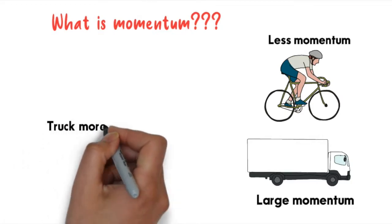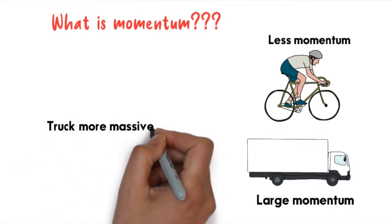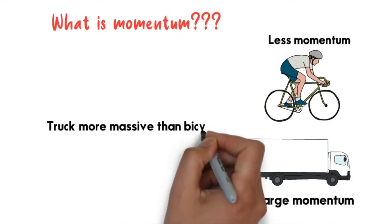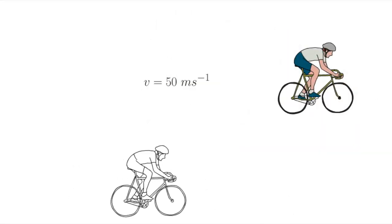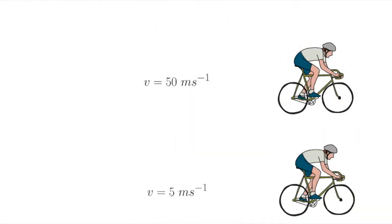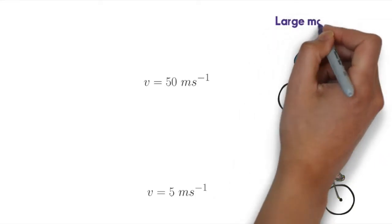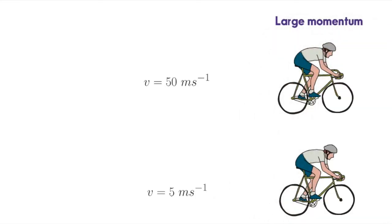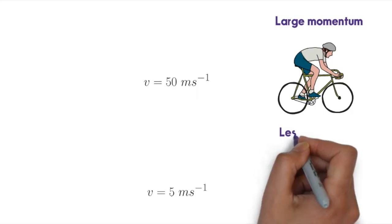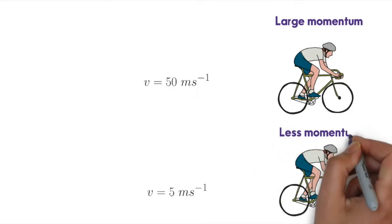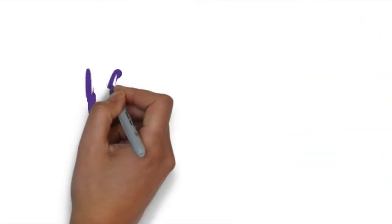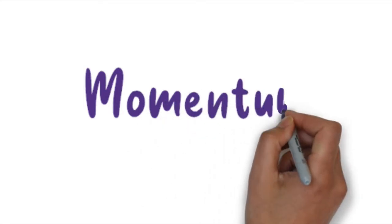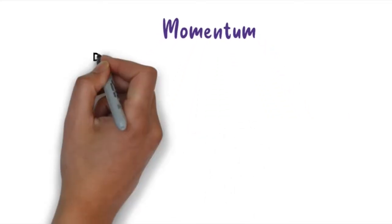Next, look at the speed of both bicycles. One has 50 meters per second and another has 5 meters per second. The one with 50 meters per second has larger momentum compared to the slower one. From here we can define momentum based on two factors: mass and velocity.